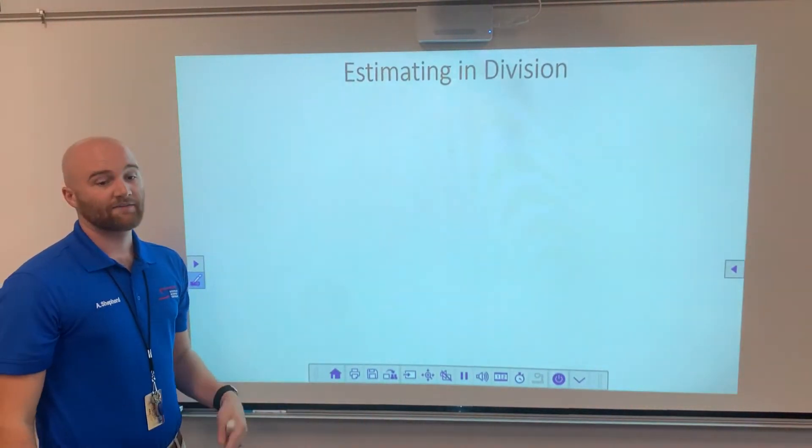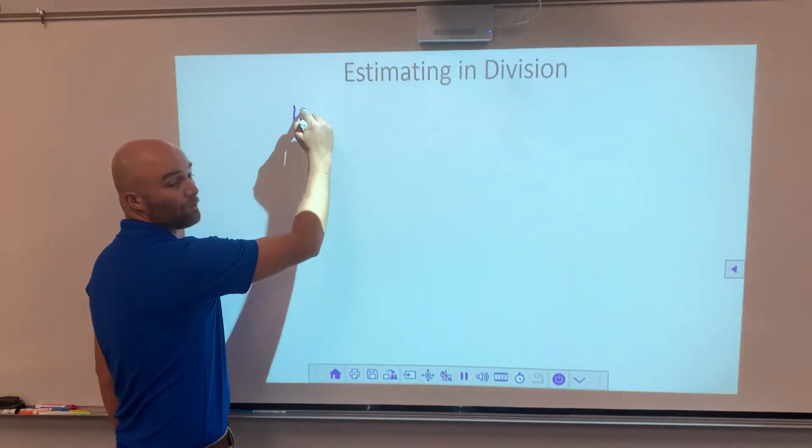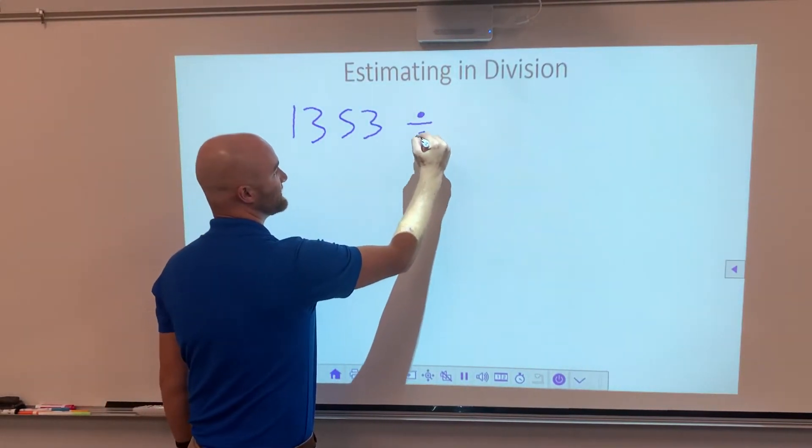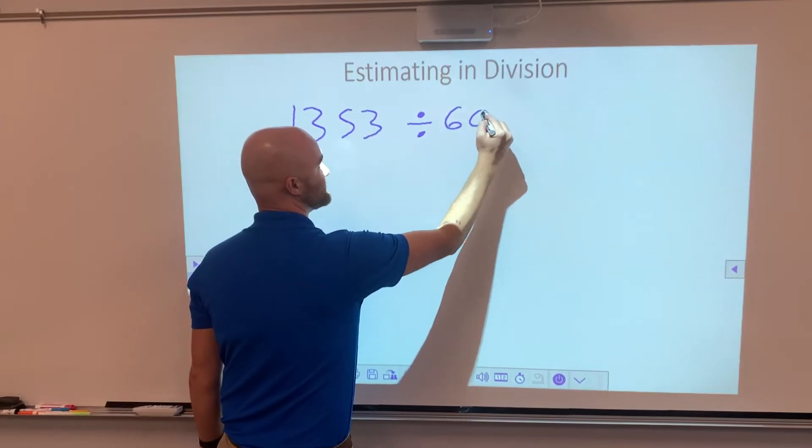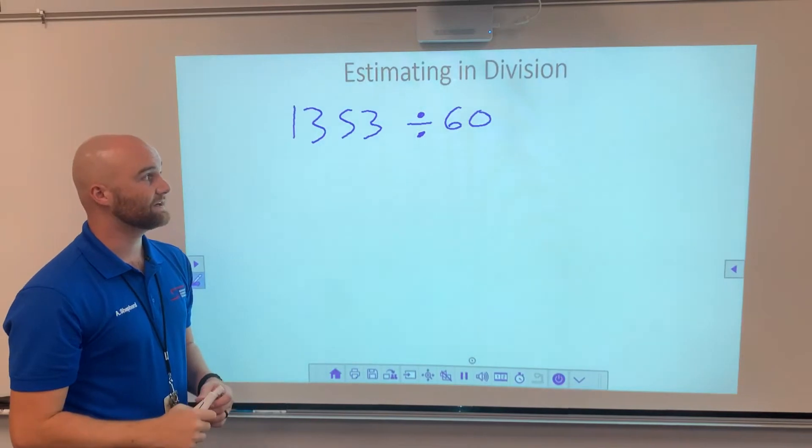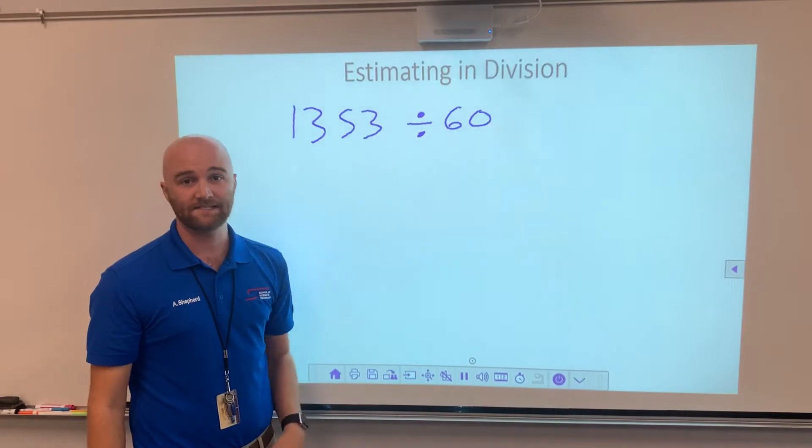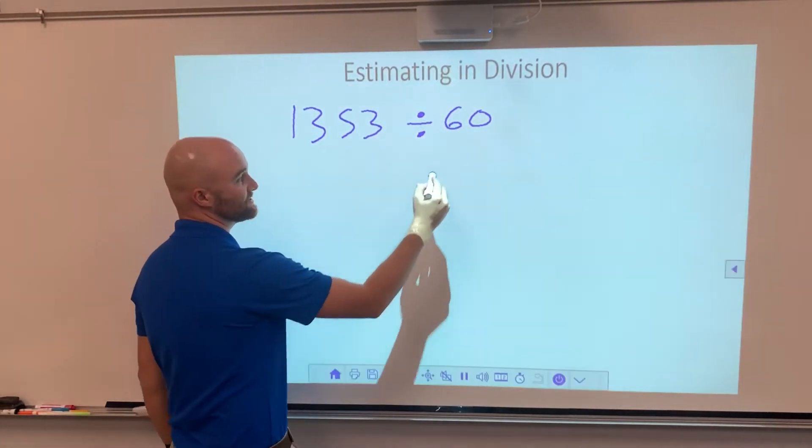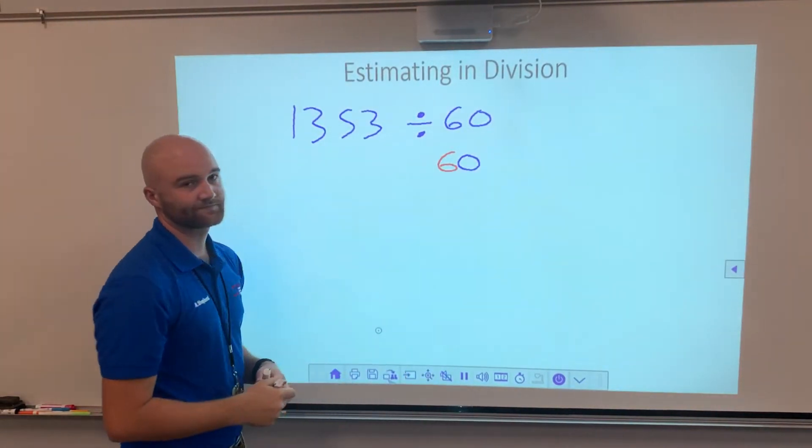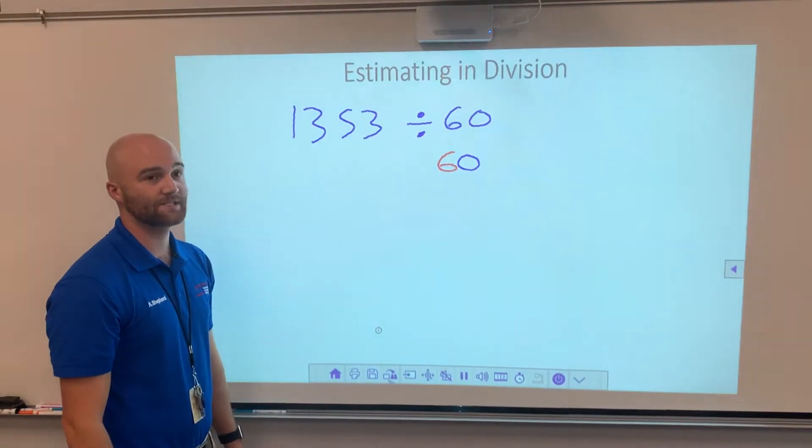What if instead of having that, I had a two-digit number? What if I had 1353 divided by 60? If I try this, 60 is not something that's easy for me to count by. So instead, I'm going to change this into thinking about it like a 6 and a 0.